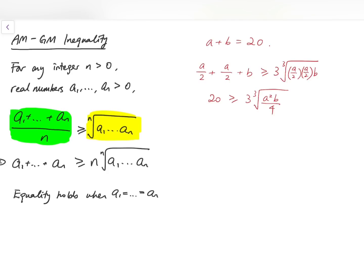We can cube both sides. We have 8,000 to be greater than or equal to 27 times a squared b over 4. So that means 8,000 times 4 over 27 is greater than or equal to a squared b. So we know that the maximum value, when a and b are just real numbers, is at most 32,000 over 27, which is approximately 1,185.